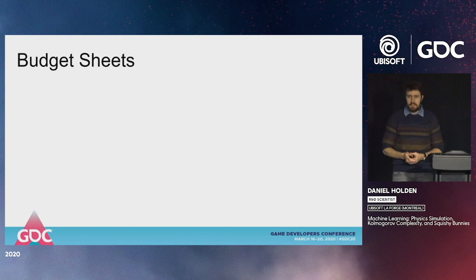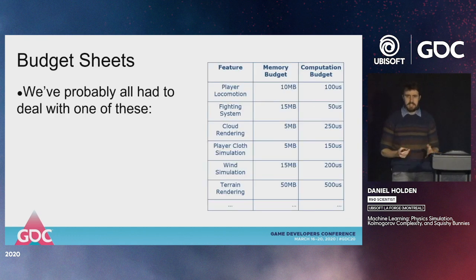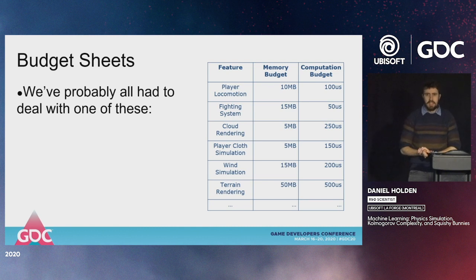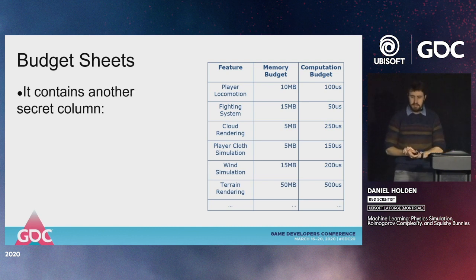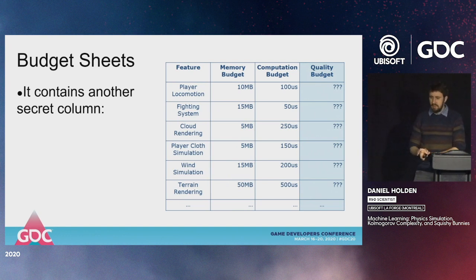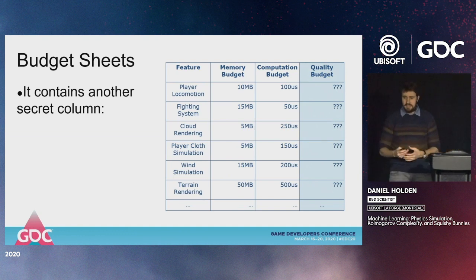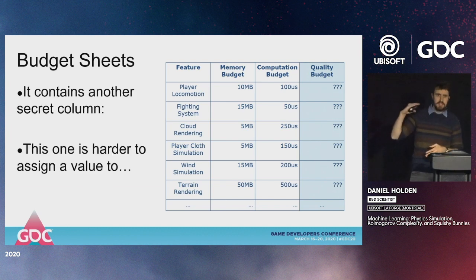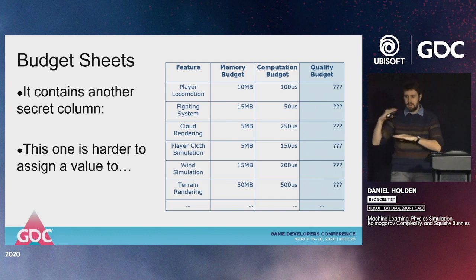I think probably all of you have seen a budget sheet — it says how much computation time and how much memory you're allowed for all the different systems in the game. But it actually contains another secret column: the quality budget. There's no numerical value to it — it's more like a yes/no switch from your lead, designer, or producer: do you reach the quality budget or not?